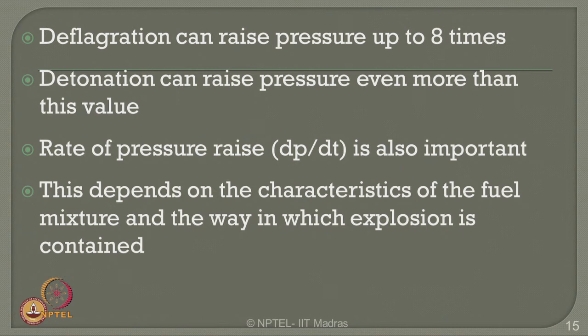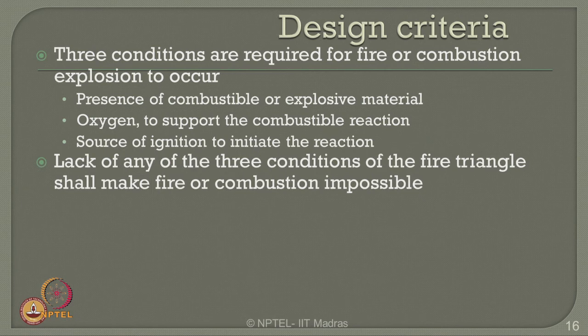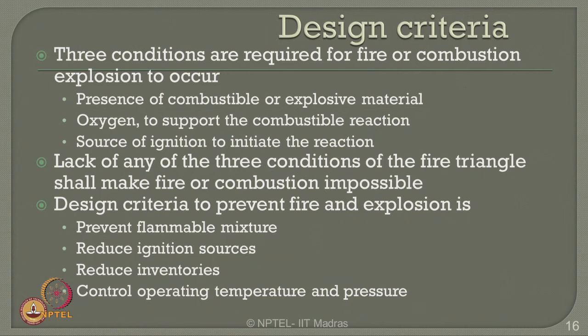This depends on the characteristics of the fuel mixture and the way in which the explosion is contained. Now let us look into design criteria for containing or confining explosions. Three conditions are required for fire or combustion explosion: presence of combustible material, oxygen to support the reaction, and a source of ignition. Lack of any one of these three conditions makes fire or combustion impossible. Design criteria to prevent fire and explosion: prevent flammable mixture, reduce ignition sources, reduce inventories which can cause ignition, and control operating temperature and pressure.